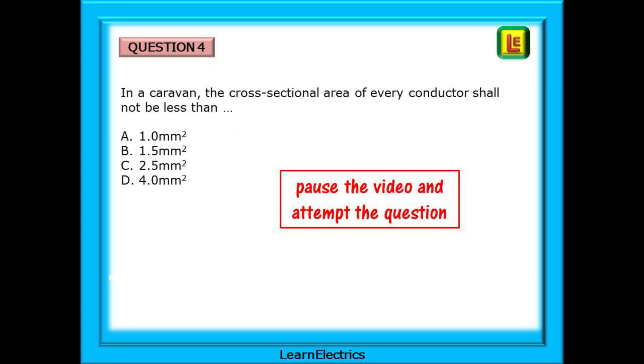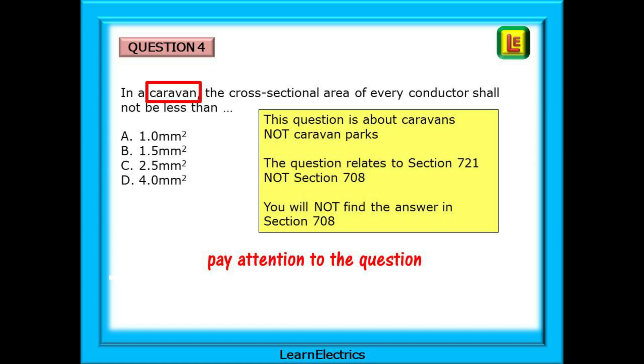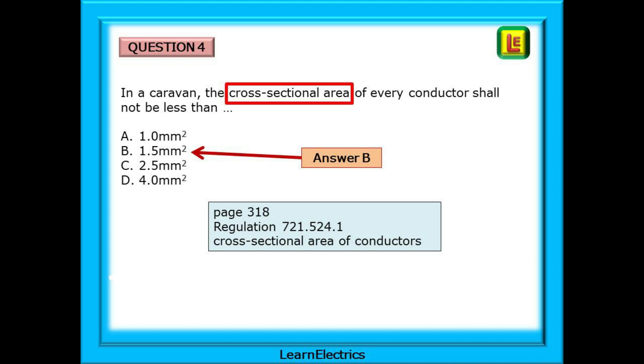Now question 4: In a caravan the cross-sectional area of every conductor shall not be less than what? Pay attention to the question. This question is about caravans not caravan parks. The question relates to section 721 not to section 708. You will not find the answer in section 708. Section 721 is for the caravan itself, the little box that you live in. Section 708 is for the caravan park, the field where you park your caravan. So assuming that we have the right section for caravans, section 721, what other key words is the question giving us? Regulation 721.524.1 is titled Cross-sectional area of conductors and there is our answer. Answer B, 1.5mm.